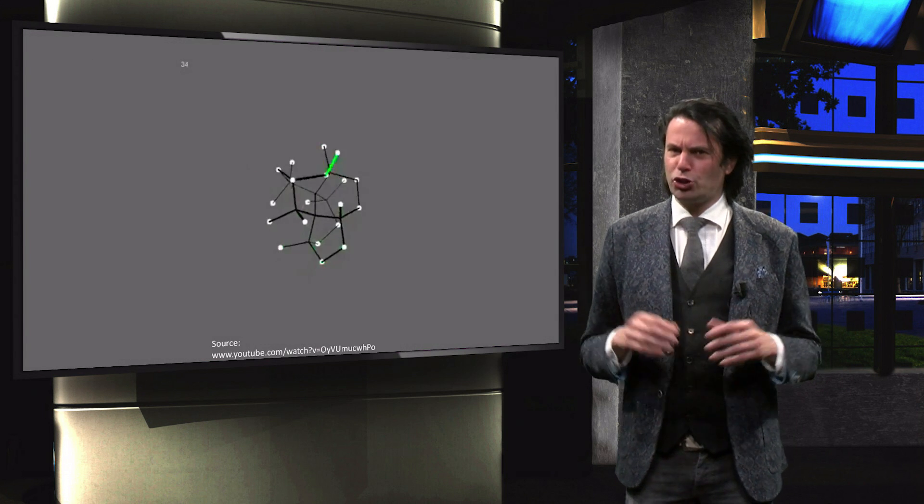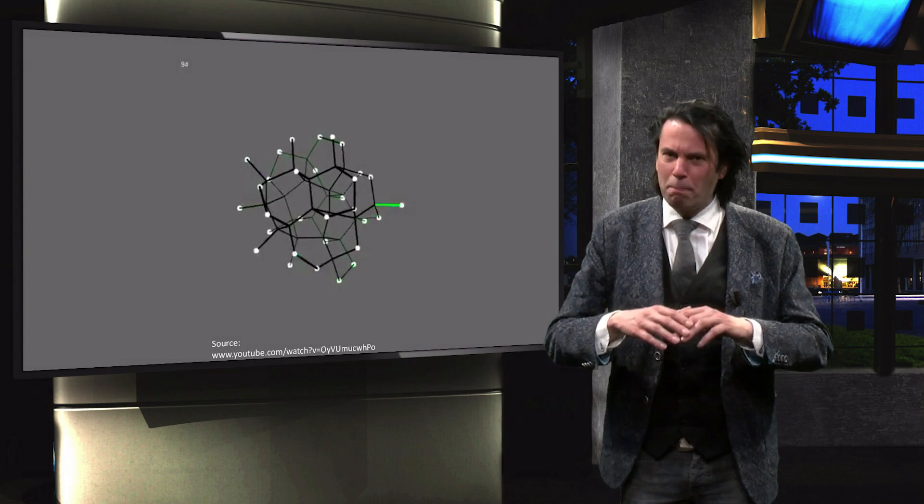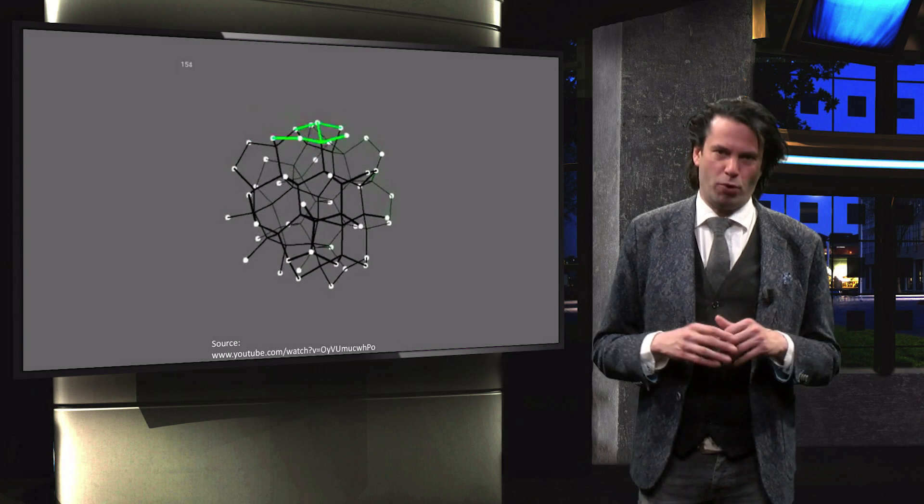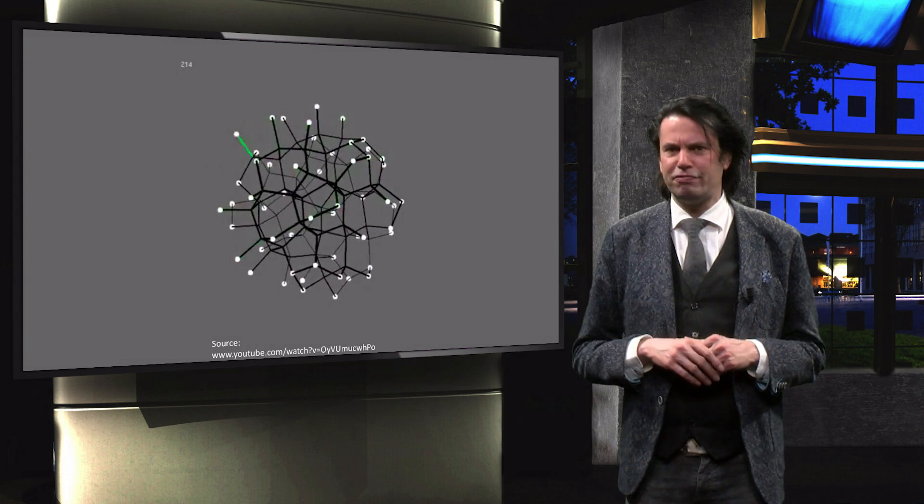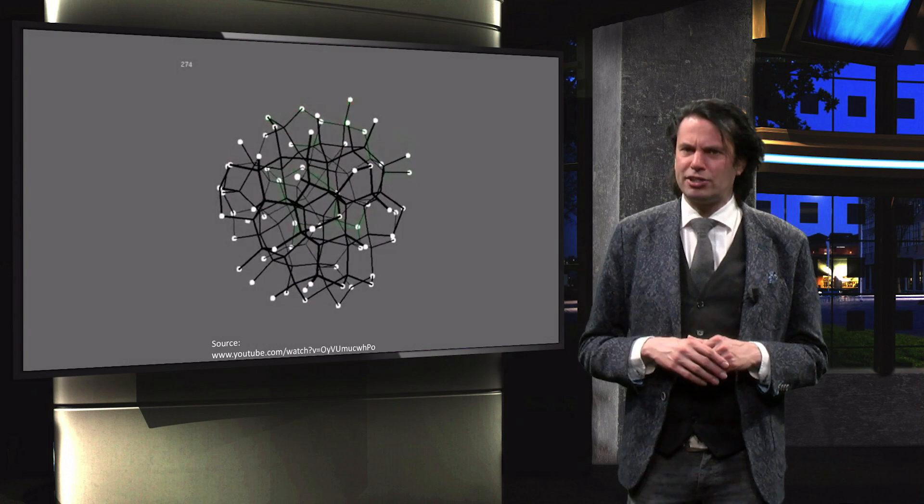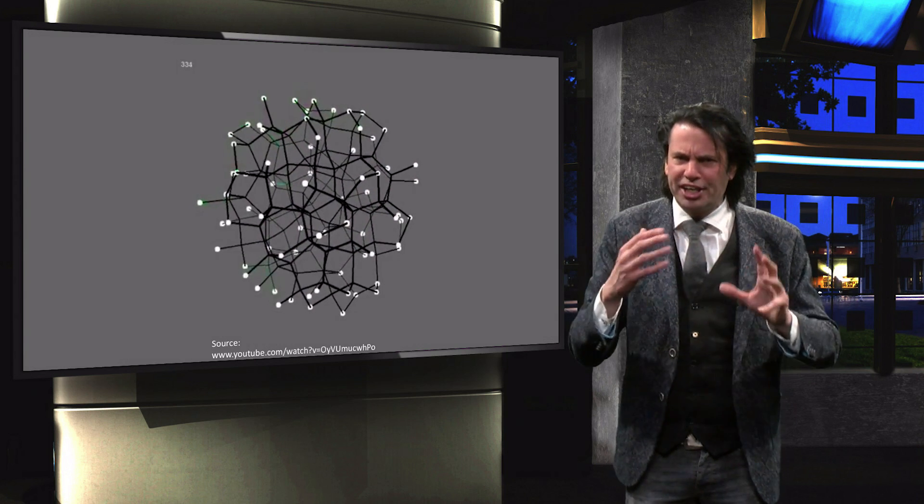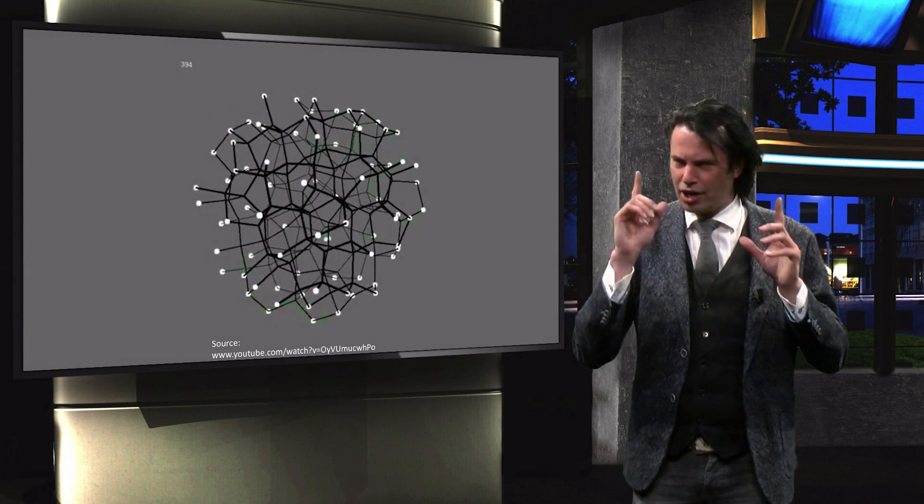This video shows an amorphous structure being built up bond by bond. As the figure builds up further, you can see that it is hard to find any order in this network, and you are correct.